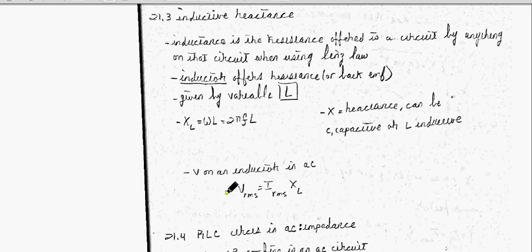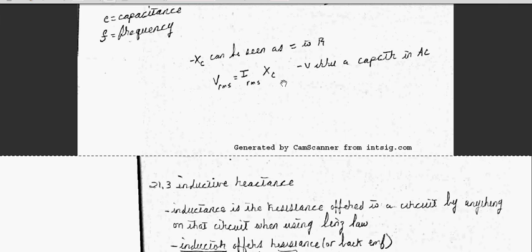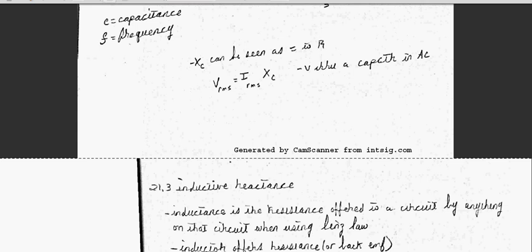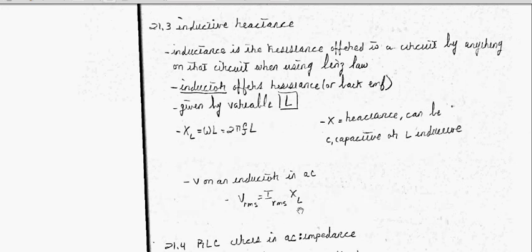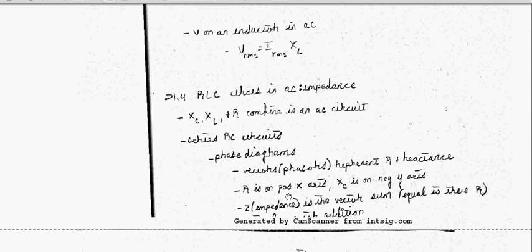And again, V equals IR. You have that right here. When you're asked for your voltage through an inductor, it's your VRMS IRMS times your XL. And for a capacitor, it's your VRMS IRMS times your XC that we covered already in the previous section. Moving on.